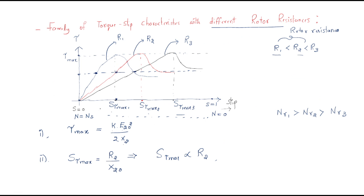This is about the family of torque-slip characteristics with different rotor resistances. When rotor resistance increases, the linear stable region increases and slip at maximum torque increases, but the rotor speed decreases and the operating point moves away from synchronous speed. The disadvantage is that copper losses increase and machine performance decreases. To maintain performance, rotor resistance should be kept as small as possible.